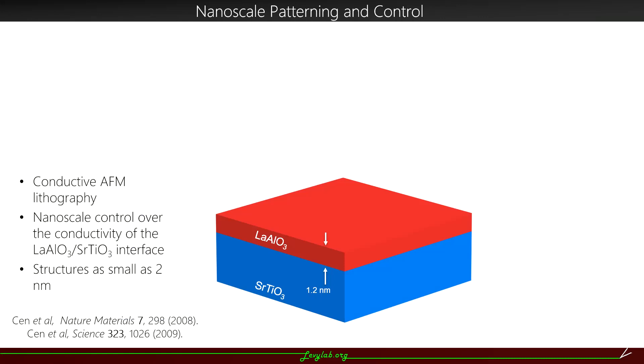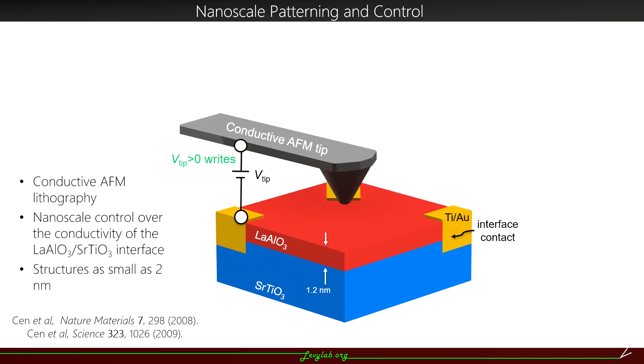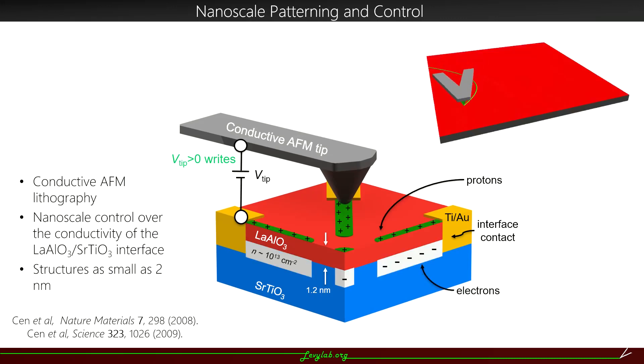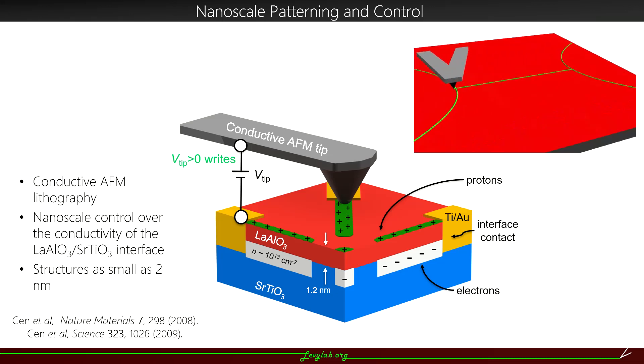So what we do is begin with LAO grown 3.4 unit cells, or 1.2 nanometers. We deposit gold electrodes to allow us to measure transport at the interface. We then introduce a conductive AFM tip. By applying a positive bias to the tip, we can remove electrons from the surface, leaving protons on the surface that will attract electrons to the interface. A negative voltage will remove protons, restoring the insulating state. The video in the upper right is showing writing of current and voltage leads, and it just finished writing a main channel. Now we will modulate the tip voltage, positive and negative, in order to create a superlattice in that main channel or create insulating barriers in the device.